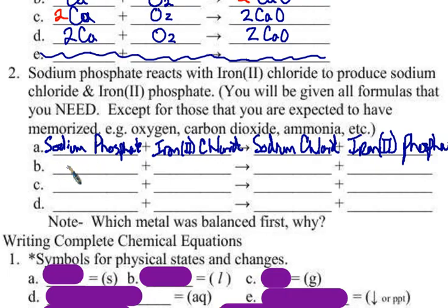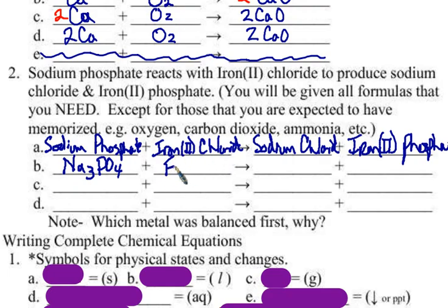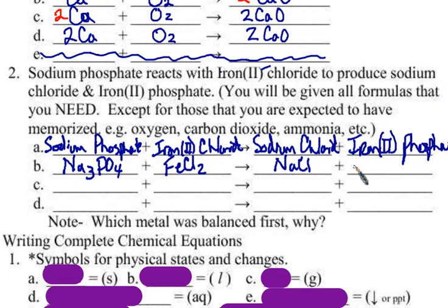Sodium phosphate is Na3PO4. Iron(II) chloride is FeCl2 — that's because iron has a plus two charge and chloride has a minus one, so we need two chlorides with the iron. Phosphate is PO4 three-minus, and sodium is plus one, so you need three sodiums, giving Na3PO4. Sodium chloride is NaCl — sodium is plus one, chloride is minus one. Iron(II) phosphate has iron as plus two and phosphate as minus three, so this one is Fe3(PO4)2.